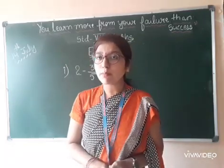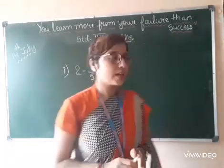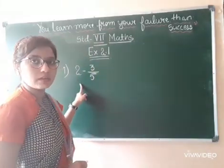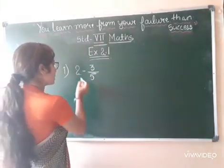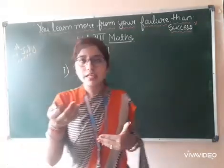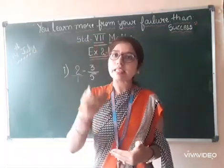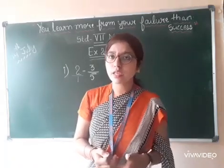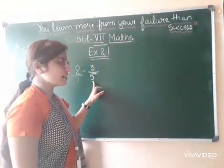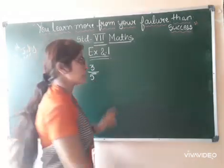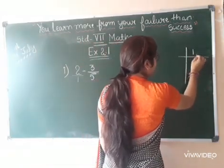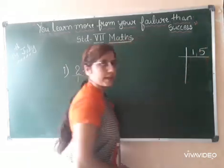And how we will make them equal — by taking LCM. Now here you see, 2 has nothing in the denominator, that means we have to assume it as 1. Agar denominator mein kuch bhi nahi diya hai, toh hum us mein 1 assume karenge. That means here it is 1 and here it is 5. We will take the LCM of 1 and 5.